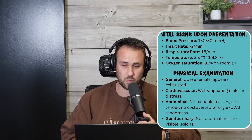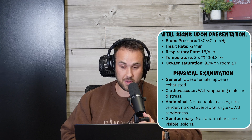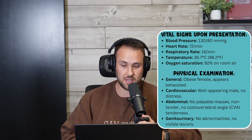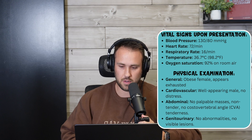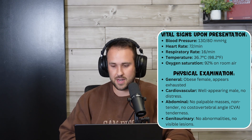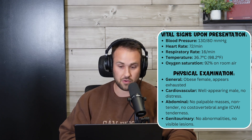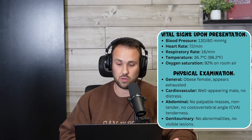Physical exam: vitals are 130/80, heart rate 72, respirations 16, temp 98.1. He is a well-appearing male in no distress. Abdominal exam shows no palpable masses, non-tender, no CVA tenderness. Genitourinary: no abnormalities, no visible lesions. What is your next step in the diagnostic approach, and what do you have on your list of differential diagnoses?